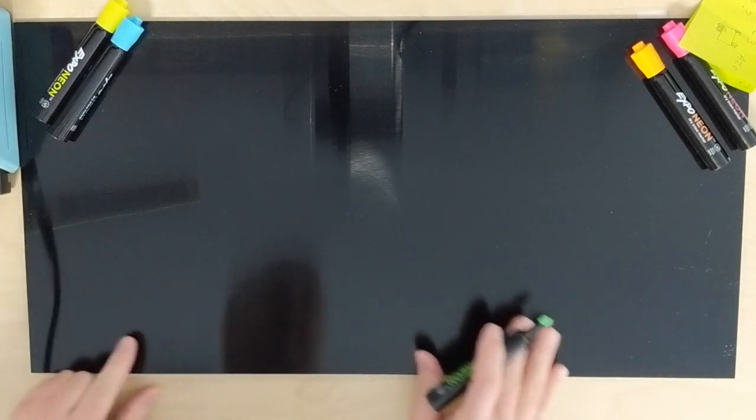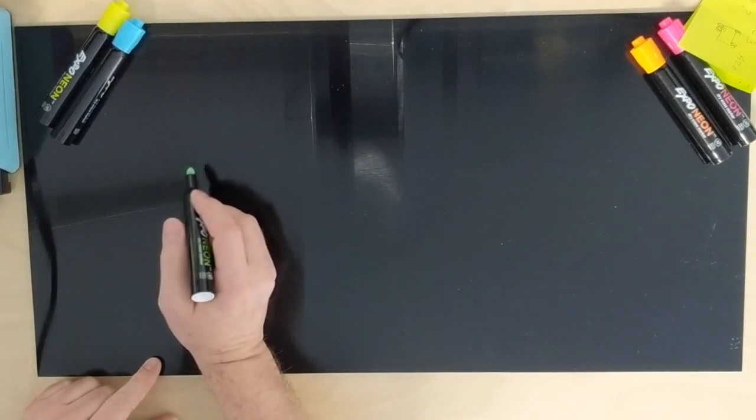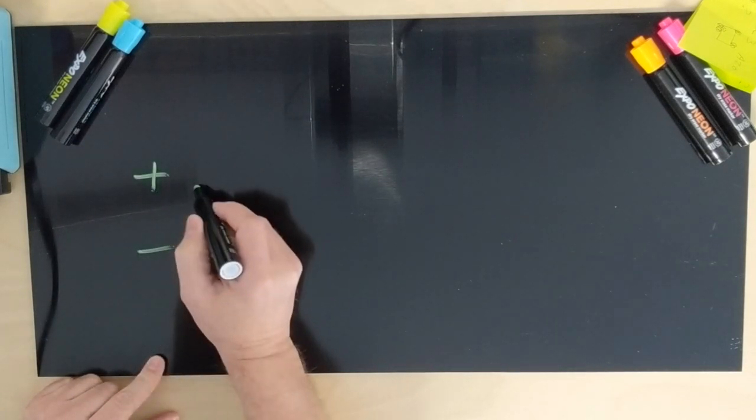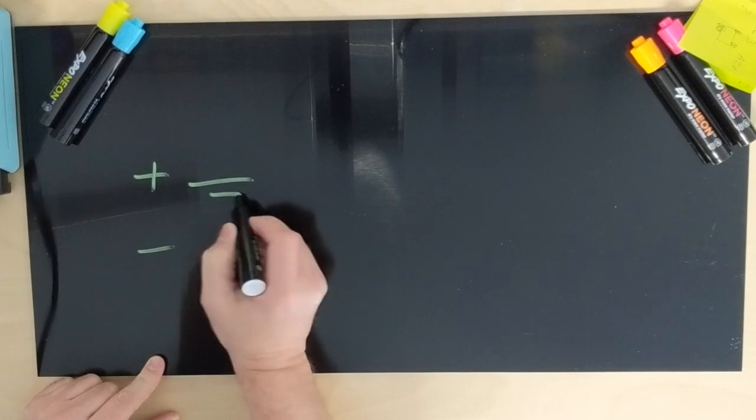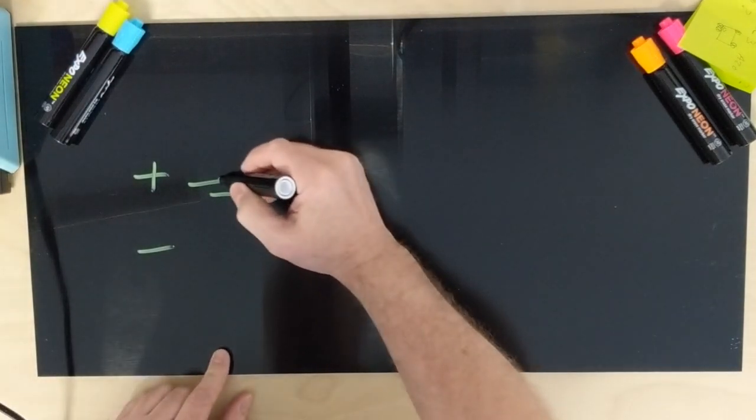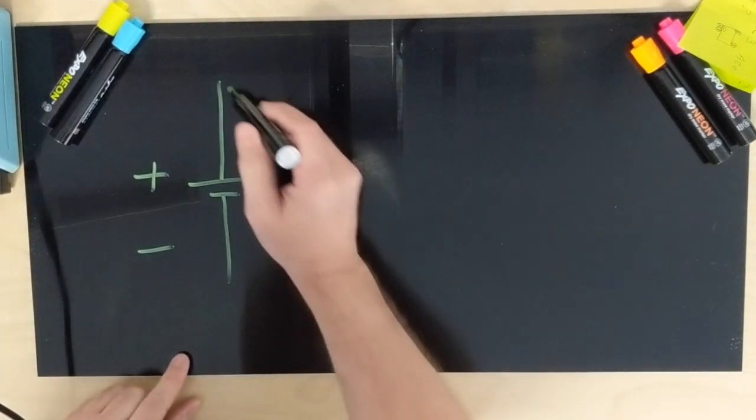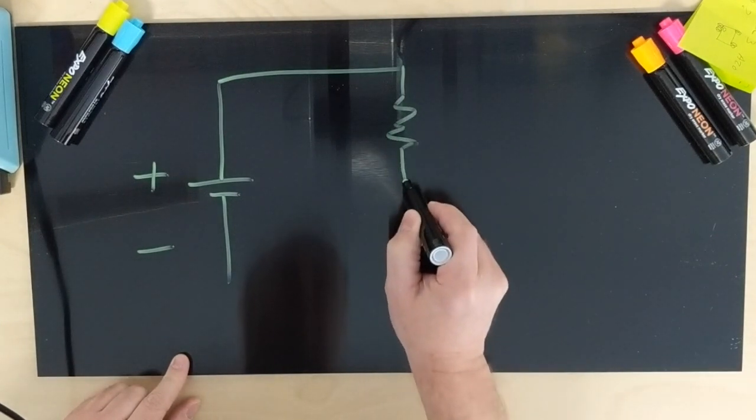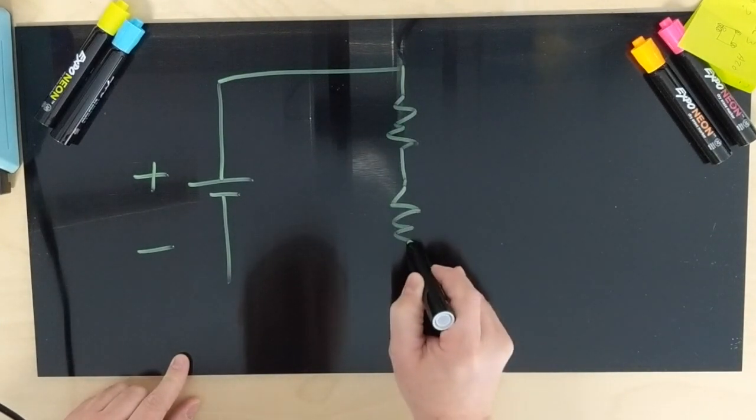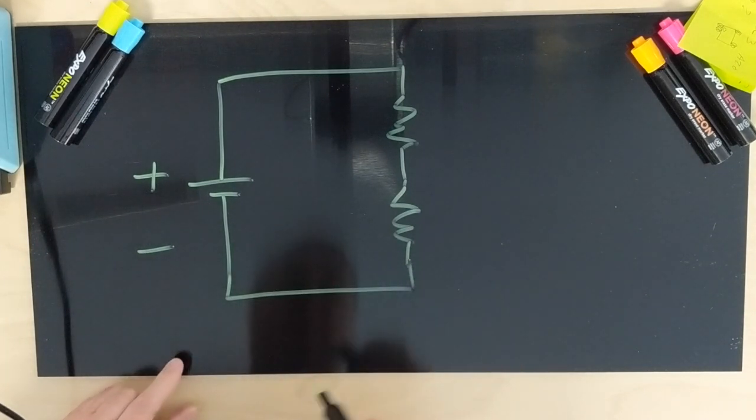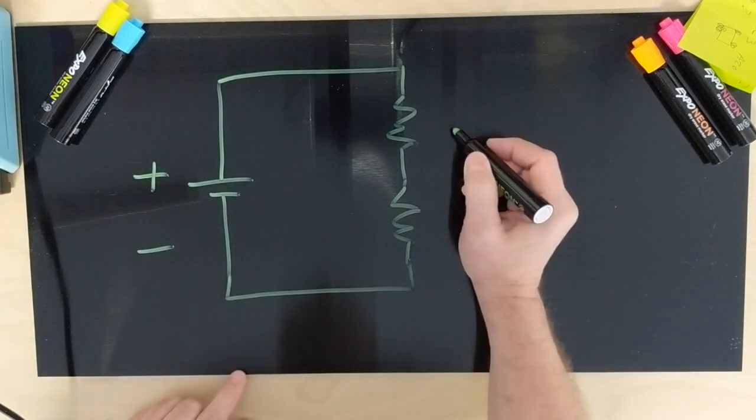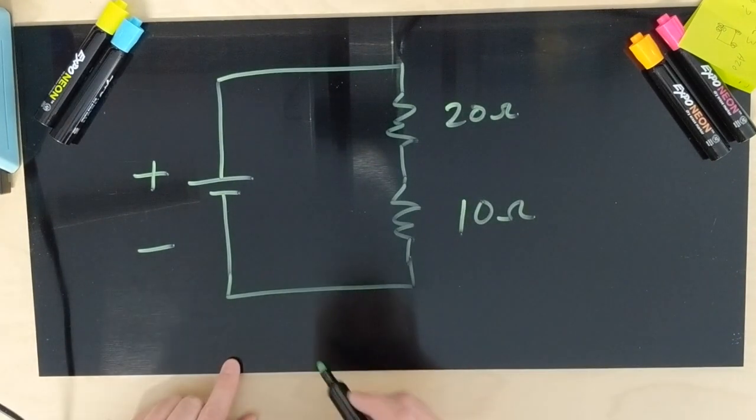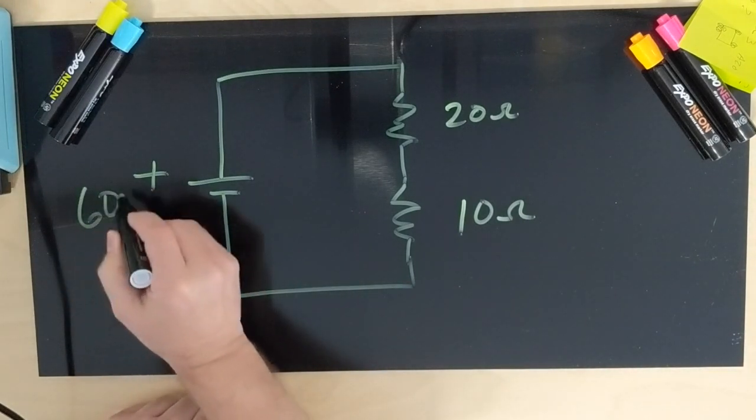We'll draw a plus and a minus, draw our battery here with a long line and a short line showing a cell. We're going to draw a resistor here and a resistor here. We'll call this one 20 ohms and this one 10 ohms, and we have a voltage here of 60 volts.